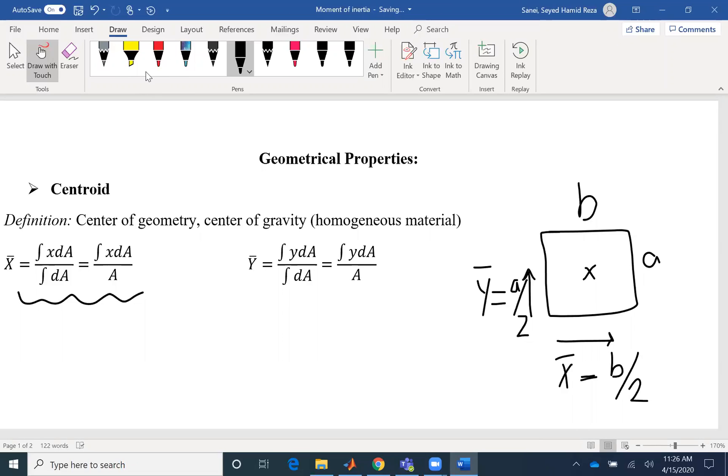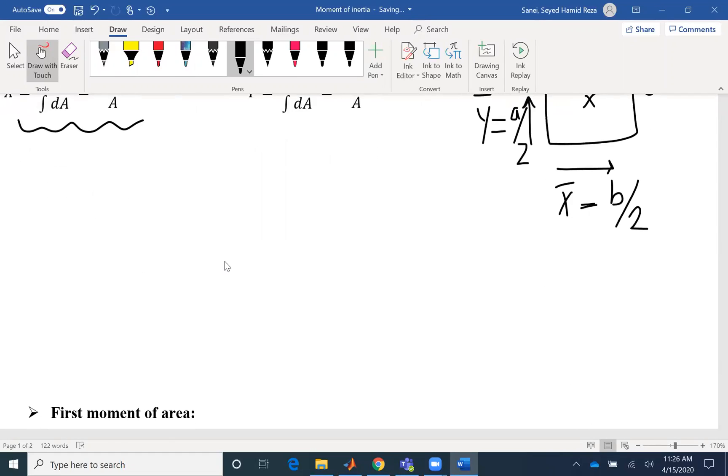So the application of center of gravity is when we are going to apply the gravitational force. Instead of applying a distributed load, we can replace it with a point load and apply that load at center of gravity. That's where the force of gravity is being applied.